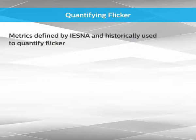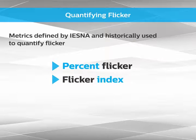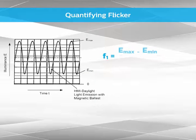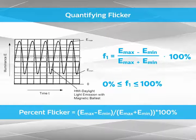Metrics defined by IESNA and historically used to quantify flicker are percent flicker and flicker index. Of the two, percent flicker is better known and is the one which is used by sports federations.